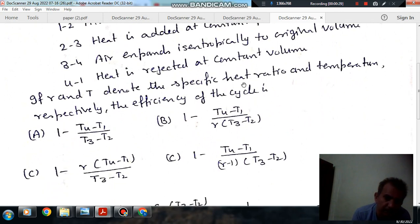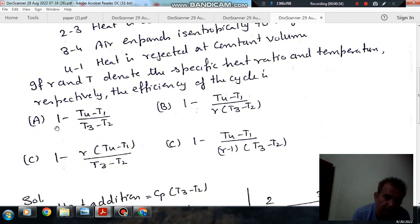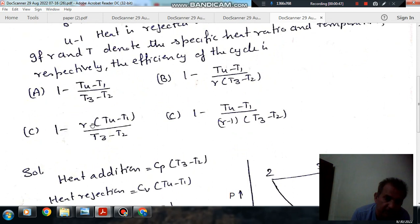If gamma and T denote the specific heat ratio and temperature respectively, the efficiency of the cycle is: Option A, 1 minus T4 minus T1 divided by T3 minus T2. Option B, 1 minus T4 minus T1 divided by gamma bracket T3 minus T2.